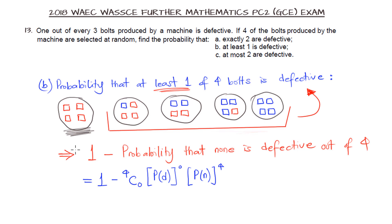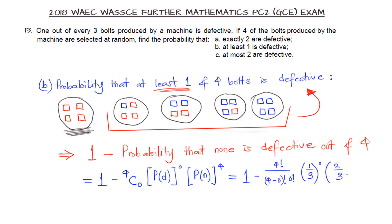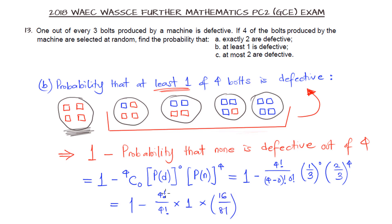Expressing this: 4 factorial over 4 factorial times 0 factorial, with 1 over 3 to the power 0 equaling 1, and 2 over 3 to the power 4 giving 16 over 81. So we get 1 minus 16 over 81, which is 81 minus 16 over 81, giving us 65 over 81.